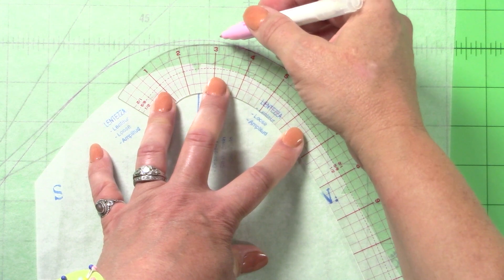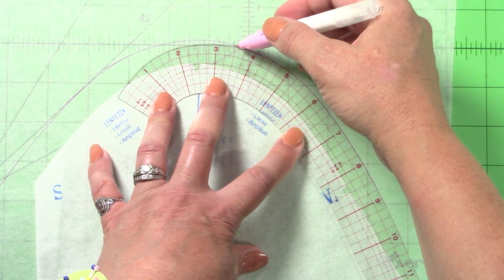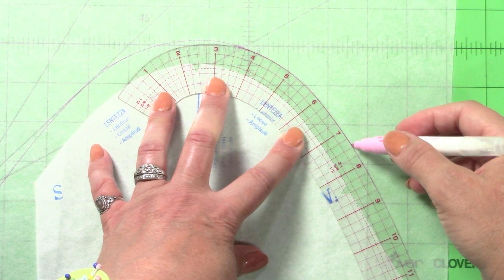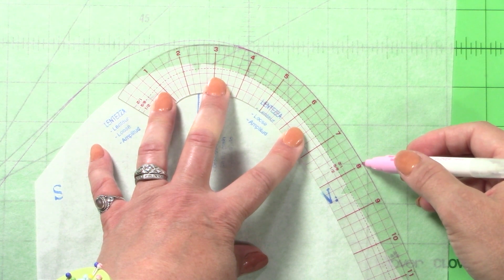The curved rulers include a French curve, ideal for drafting necklines and armholes, and marking accurate seam allowances through these curvy areas.